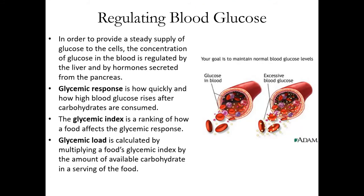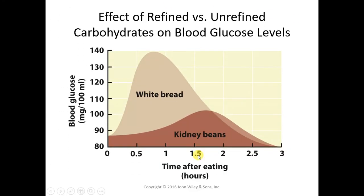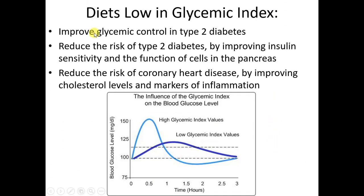Now a quick look at diabetes — there will be a couple of test questions on this important topic. When we talk about blood glucose regulation, we often use the term glycemic index; glycemic response and glycemic load are related terms. They describe how the food you eat affects your blood sugar. White bread has a high glycemic index because blood sugar shoots up after you consume it; kidney beans have a lower glycemic index. Diets lower in glycemic index have a number of health benefits.